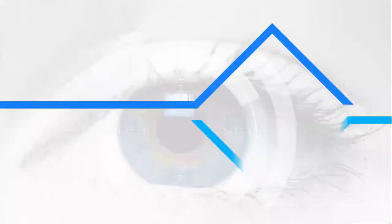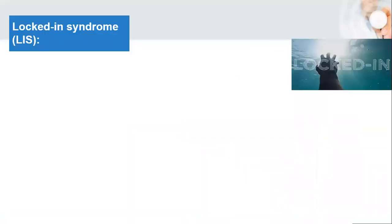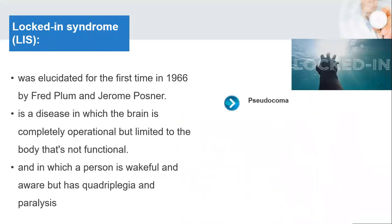Then we move towards the introduction. What is locked-in syndrome? It was elucidated for the first time in 1966 by Fred Plum and Jerome Posner. It is a disease in which the brain is completely operational but limited to the body that's not functional, and in which a person is wakeful and aware but has quadriplegia and paralysis. The patient can move eyes but cannot speak.